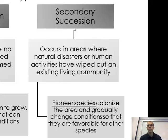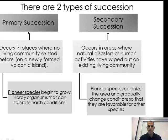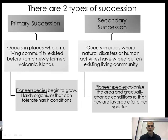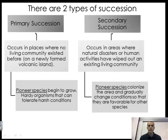So primary succession — there were no living organisms there. Secondary succession — there were once living organisms, they got wiped out, and pioneer species had to come back in and settle that particular area.